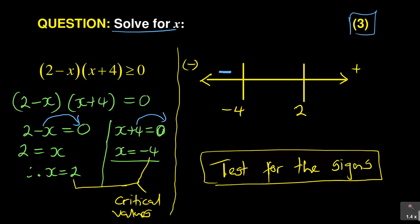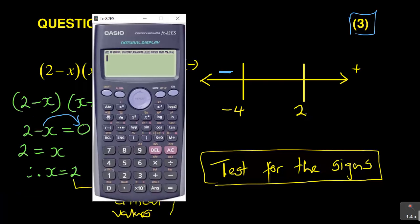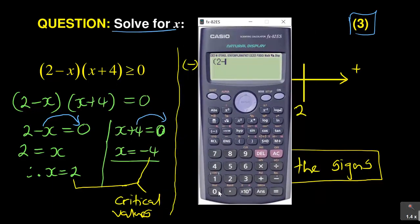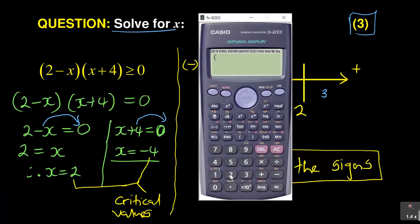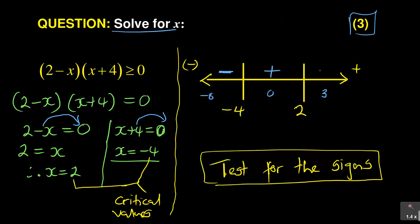Before negative 4, I get a negative. Now test a value between negative 4 and 2 — use 0 since it's simple: (2 minus 0)(0 plus 4) gives a positive, so that region is positive. Then test a value after 2, say 3: (2 minus 3)(3 plus 4) gives negative 7, which is negative. So the sign pattern is: negative, positive, negative.